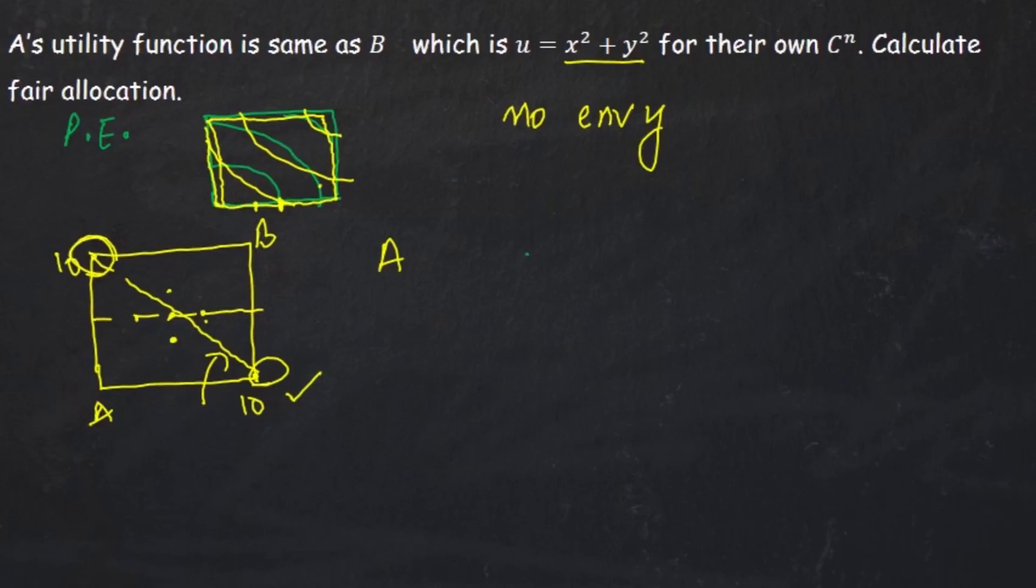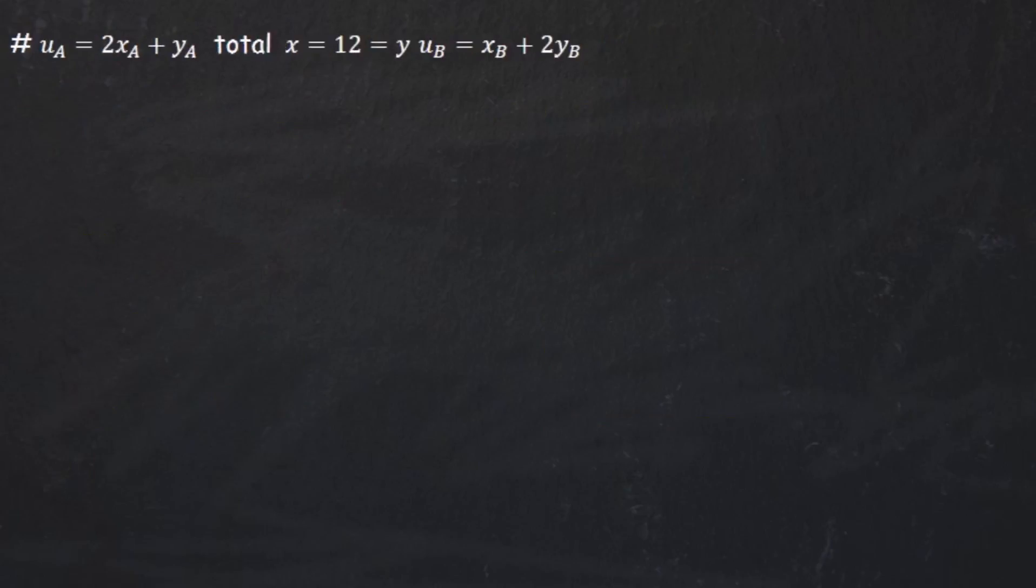So in the whole box that we make, Pareto efficiency wherever it is, no envy wherever it is, Pareto efficiency is at 4 corners, no envy is the whole line. We have for fair allocation only 2 points. These two points will be this corner and this corner. And this I got strictly from hit and trial. I didn't use any numerical. In the next question, however, which is this question, we are going to use the numerical way.